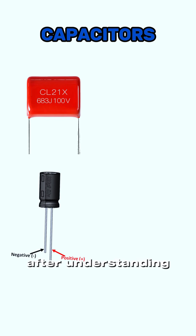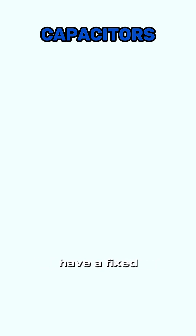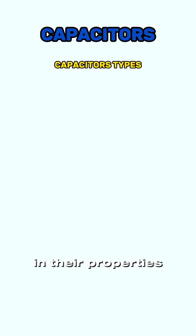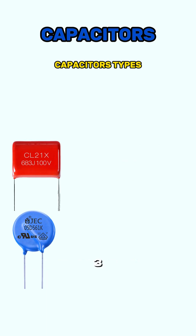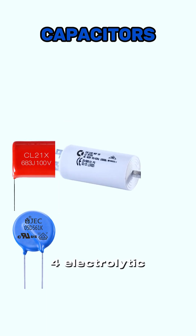After understanding the classification of capacitors, let's learn about their types. We categorize capacitors into two mechanical groups: fixed capacitors, which have a fixed capacitance, and variable ones. The main types of capacitors include: 1. Ceramic capacitors, 2. Film capacitors, 3. Power film capacitors, and 4. Electrolytic capacitors.